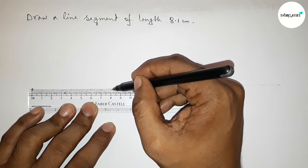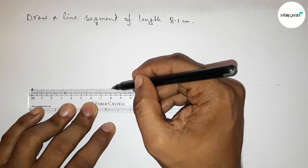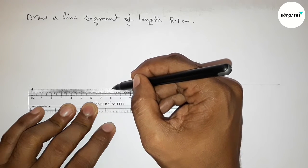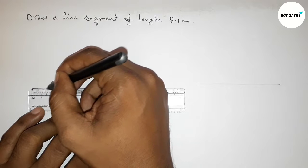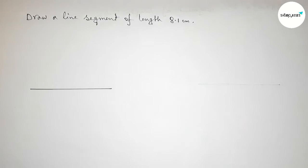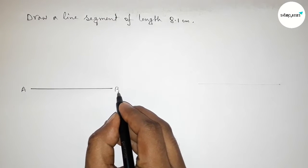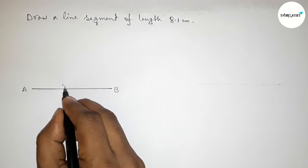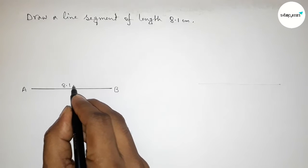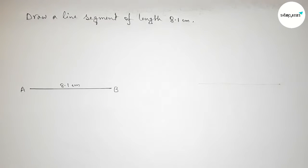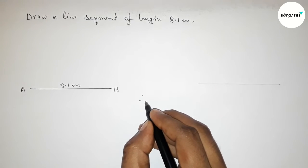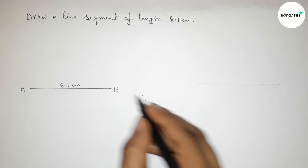So this is eight point one centimeter length and joining this, taking here point A and here B. So AB is a line segment of length eight point one centimeters.